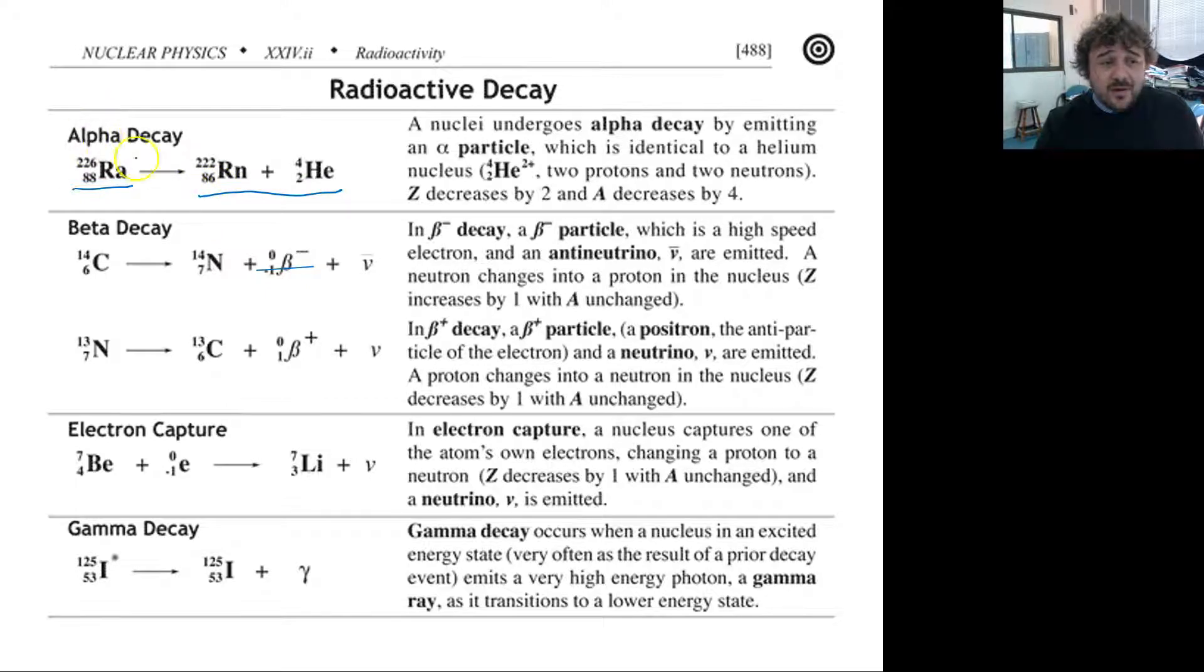So we start off with radium over here. This is our radium and it decays into radon and helium or an alpha particle. So over here we see that it's a helium particle. So it's identical to a helium nucleus. This has no electrons.